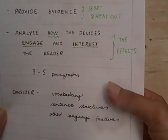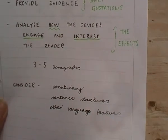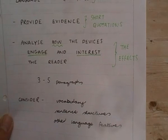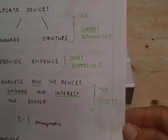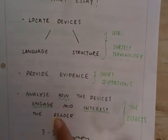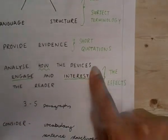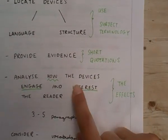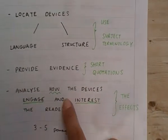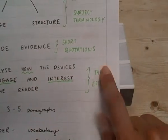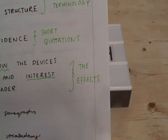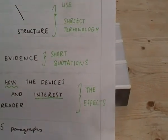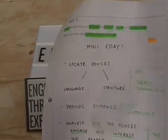Consider things like vocabulary, sentence structures, paragraph structures, and other features as well — all the time thinking about the effects. If you're going to say how it interests the reader, you're going to be talking about how it achieves the effect it wants to. Alright then, I hope that's helped.